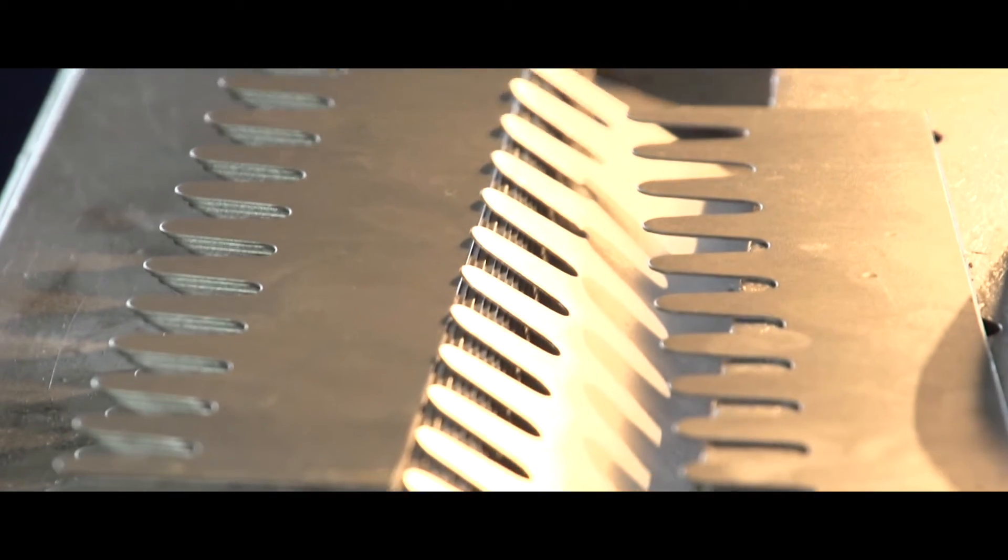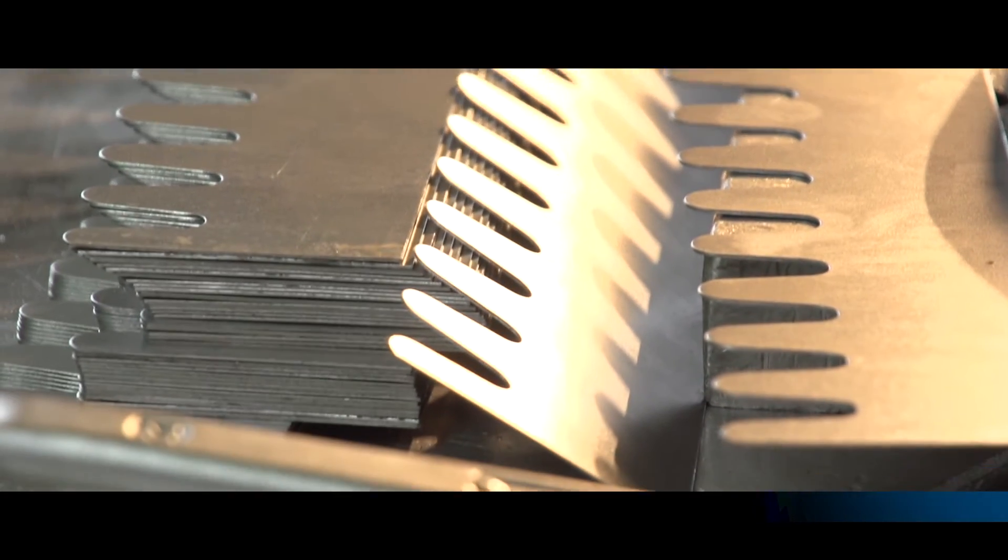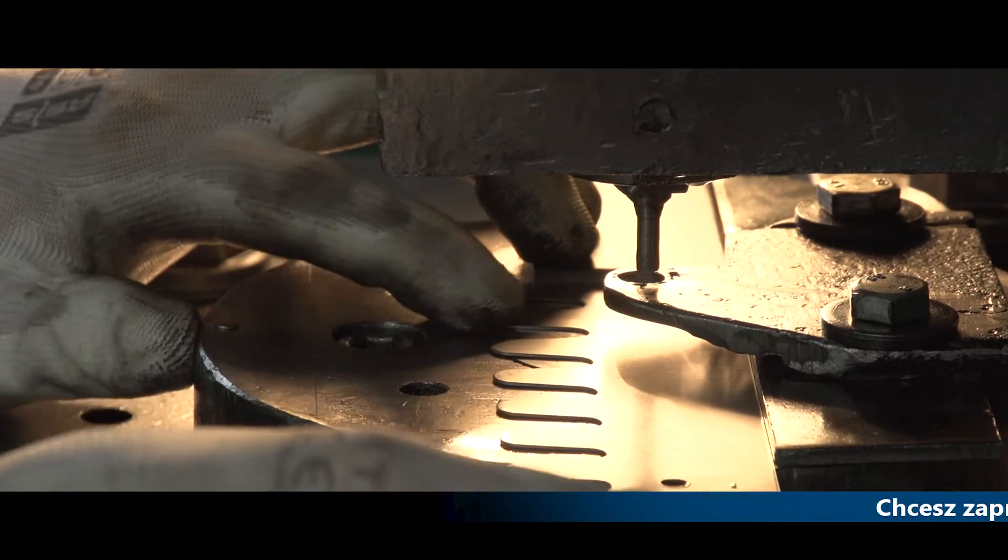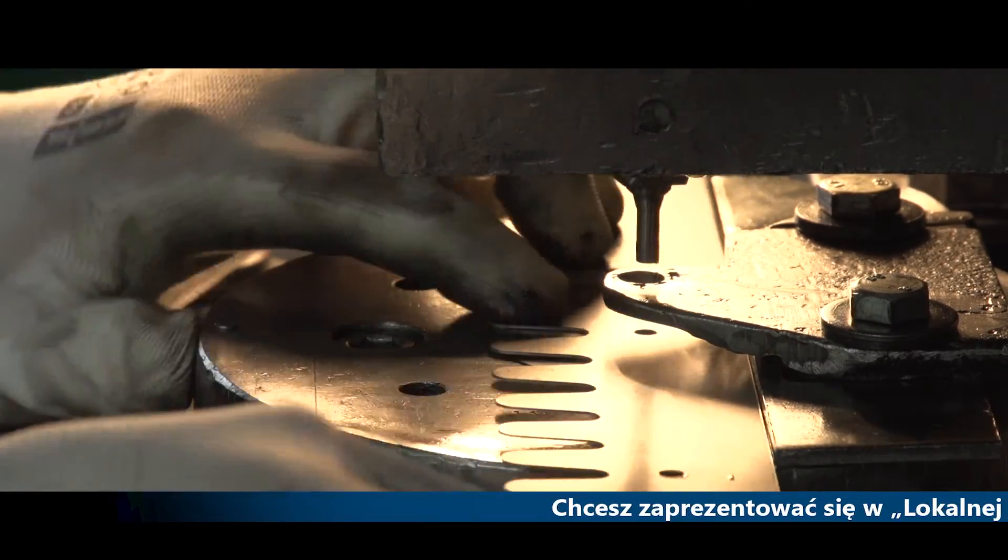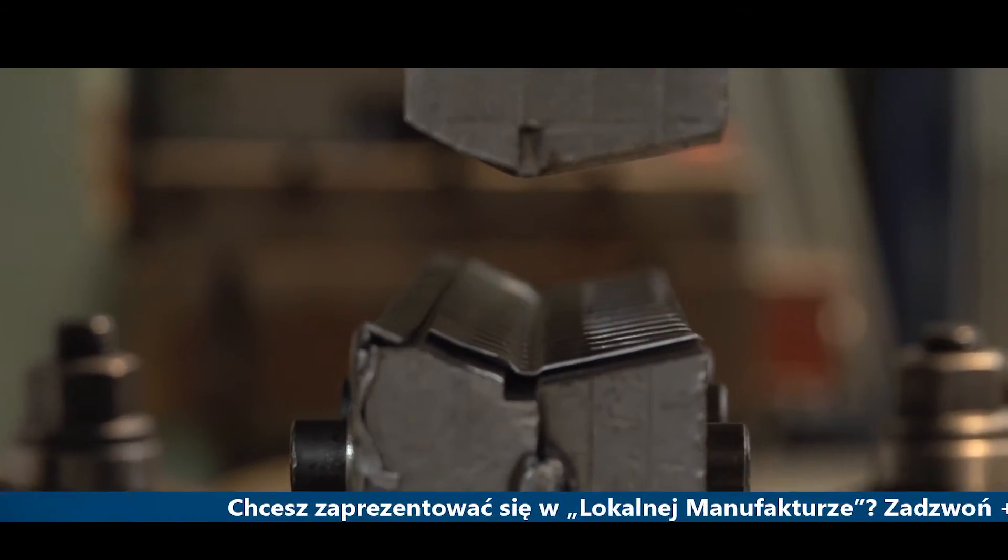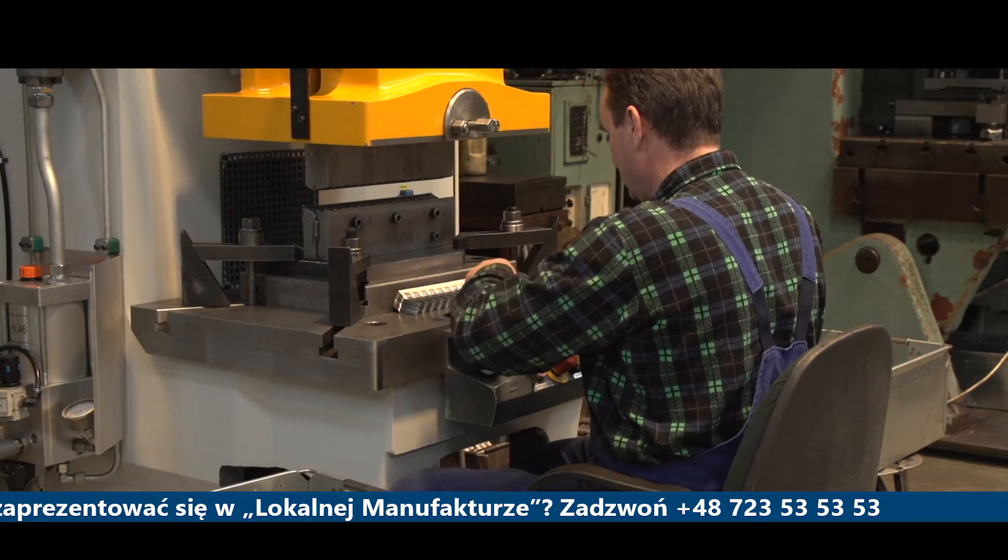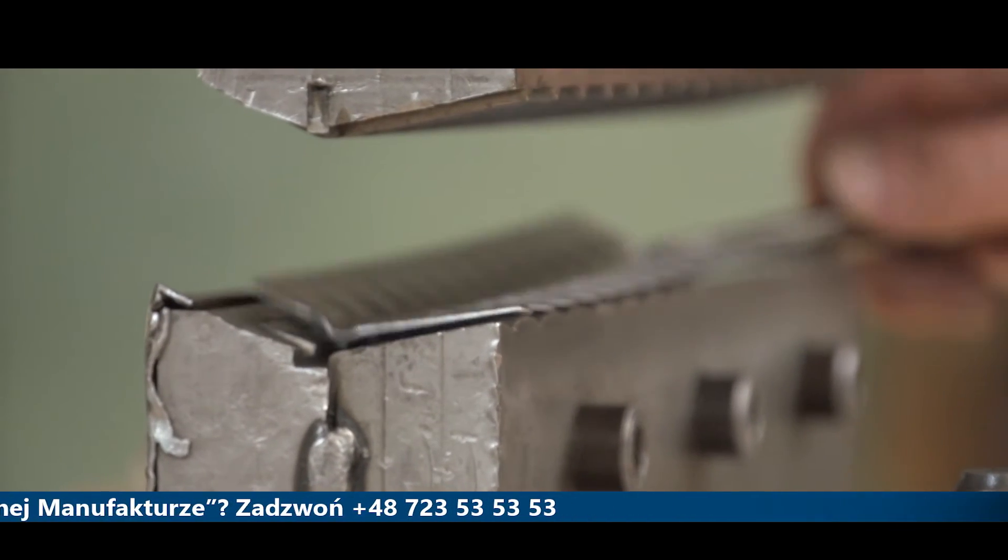Tymczasem trwa produkcja sit. Lamele są już wycięte, otwory wydziurowane, ale dalej jest to tylko płaszczyzna. Kolejny etap, czyli przetłoczenia, formują detal w przestrzeni 3D.